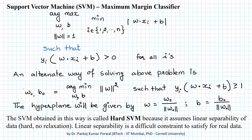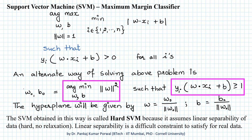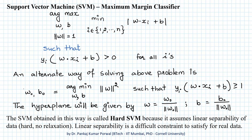The soft support vector machine algorithm incorporates relaxation in the linear separability constraint by modifying both the objective function and the constraint equation in the alternate formulation of the support vector machine.